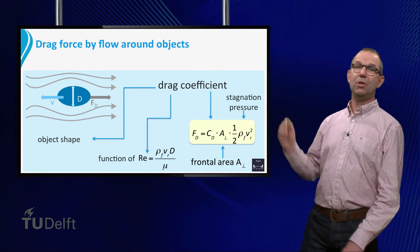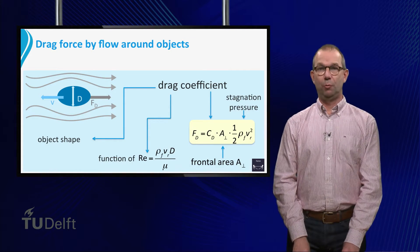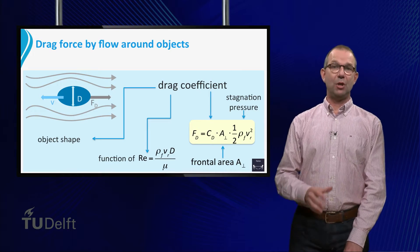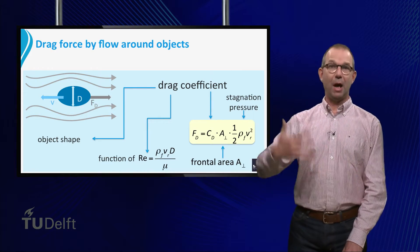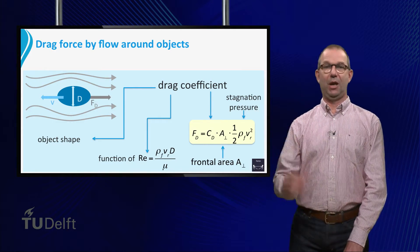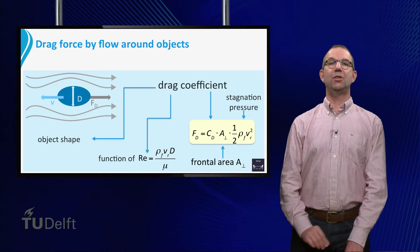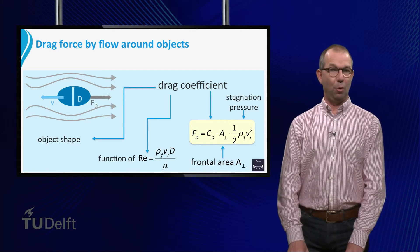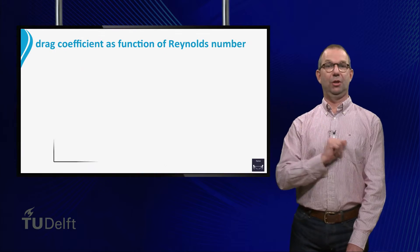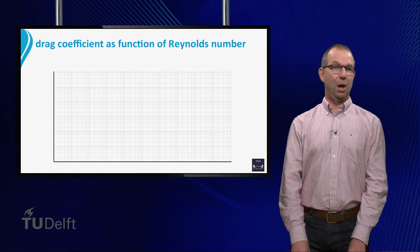In this sheet we see a quick overview of what we found. The drag force is proportional to the frontal area of the object and the stagnation pressure. The coefficient CD in the expression is the drag coefficient. It is not a constant, but actually a function of the Reynolds number.